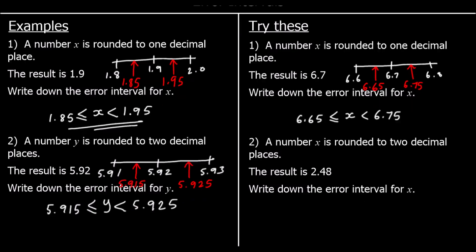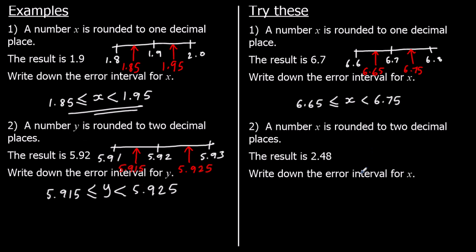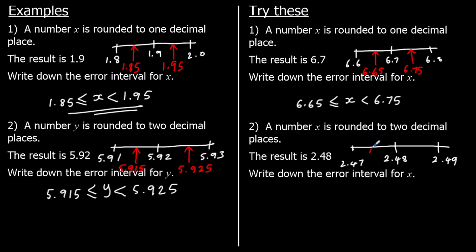The next one: a number rounded to two decimal places, rounded to 2.48. The one up is 2.49, the one back is 2.47, so our number could be anything between the two halfway points: 2.475 and 2.485. So our error interval is x is bigger than or equal to 2.475 and less than 2.485.